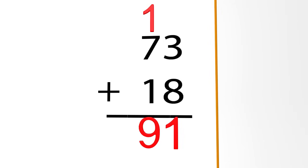So the answer is 91. 73 plus 18 is 91. You guys are really good. I want to find one more to work on.